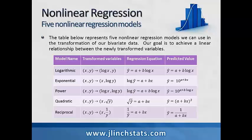Finally, we'll talk about the reciprocal transformation, where we take our variables x and y and transform them into x and 1/y. Our regression equation becomes 1/ŷ = a + bx, and our predicted value ŷ can be solved for by taking 1 divided by (a + bx). These are the five nonlinear regression models that we can use in the transformation of our bivariate data.